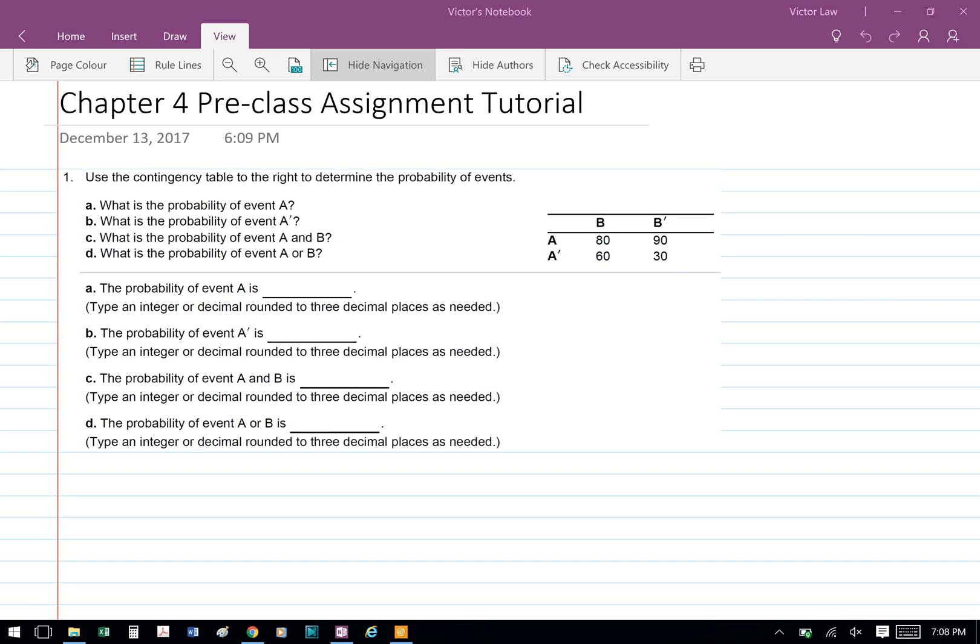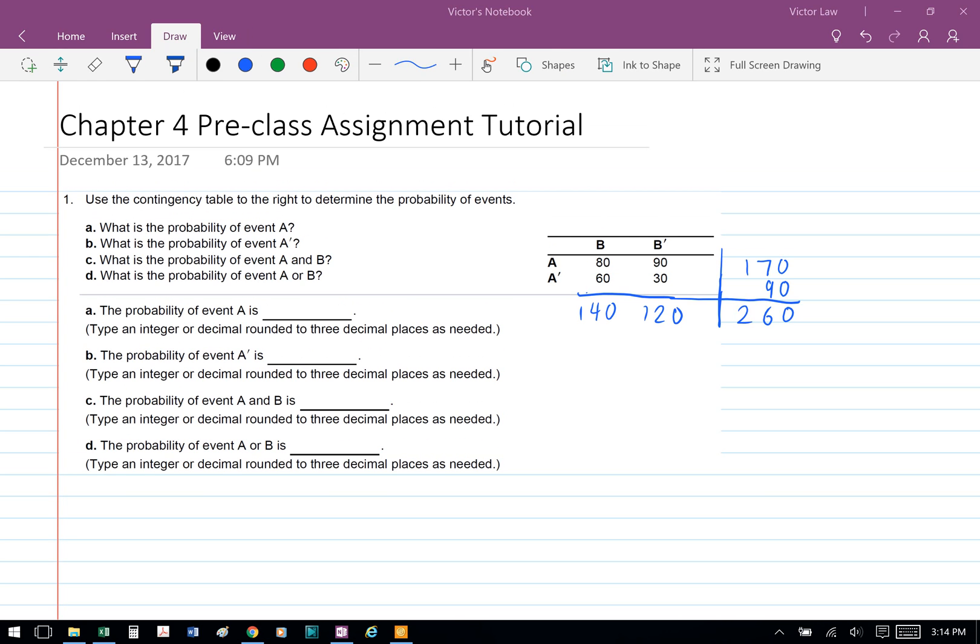Business Stat Chapter 4 Pre-class Assignment Tutorial, Question 1: Use the contingency table to the right to determine the probability of events. First, we're going to get the total for each column B and B', which is 140 and 120 respectively.